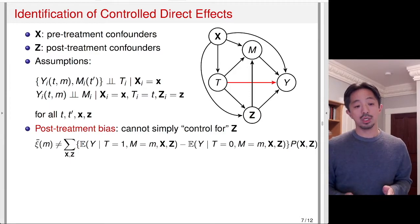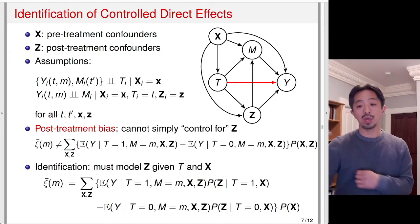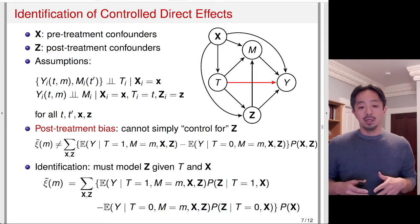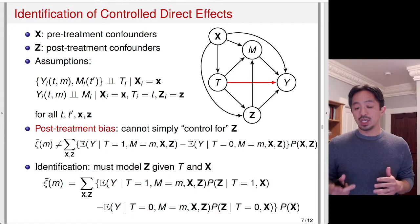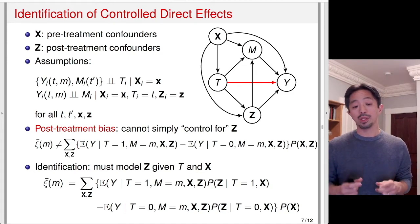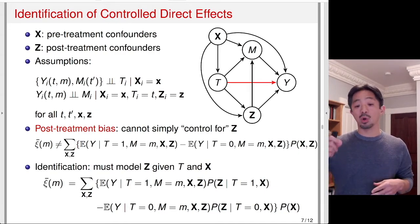Instead, what you need to do is model Z, the post-treatment confounder, given T and X. So we actually have to do additional modeling of Z given T and X, represented by P(Z | T, X). Once we model that, we can compute the difference of the conditional expectation of Y when T equals 0 versus T equals 1, holding M and X constant, but with Z coming from the predicted Z under T equals 1 or T equals 0.